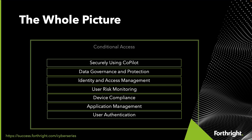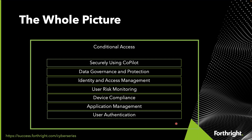This is showing us the whole picture of the series. We've talked about user authentication, we've talked about application management, next time we're going to talk about device management, then user risk monitoring. This overall starts to build out our identity and access system, which plays into our data governance and protection, and then allows us to securely use co-pilot. All of this is boxed in by our conditional access process, which is going to work with us to make sure we're doing all the right things to keep everything secure.